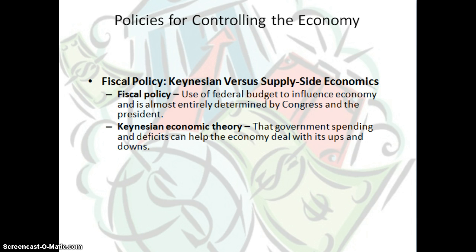John Maynard Keynes, or Keynesian Economic Theory, states that the government's spending and deficits can help the economy deal with its ups and downs. Research shows that Democrats agree with Keynes — that the government must be responsible to stimulate greater demand by increasing federal jobs programs, increasing spending, and the like.